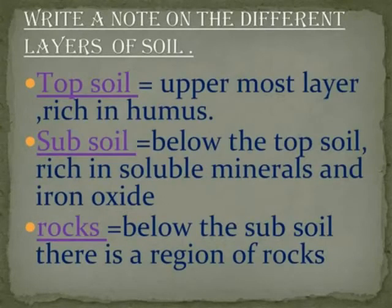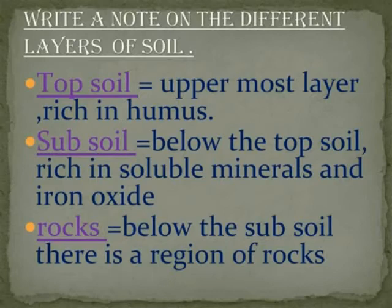A note on the different layers of soil. Topsoil: the uppermost layer, rich in humus. Subsoil: below the topsoil, rich in mineral salts and hydroxide. Rock: below the subsoil, there is a region of rocks.